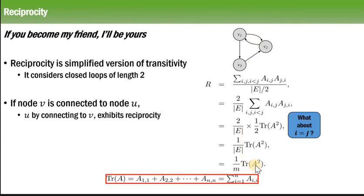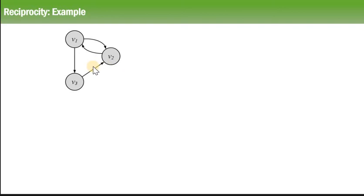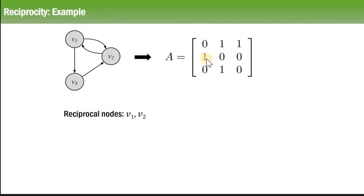So let's solve it by substituting the values here: 1 by m, m is 4, number of edges are 4. Now you have to find out the adjacency matrix. So what is the adjacency matrix for this graph? The adjacency matrix is [0,1,1; 1,0,0; 0,1,0].